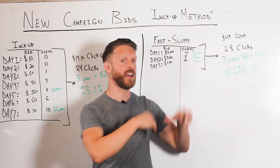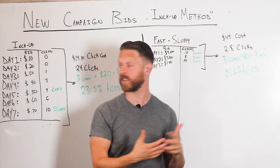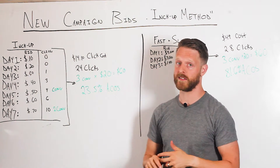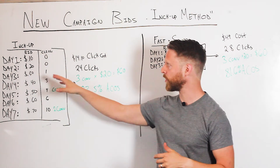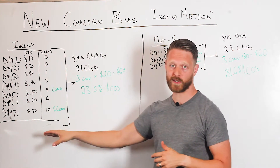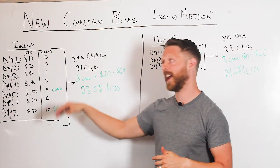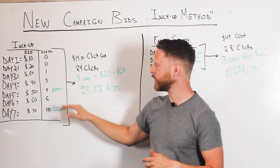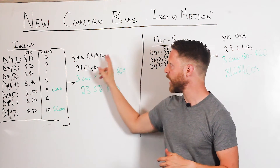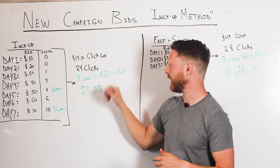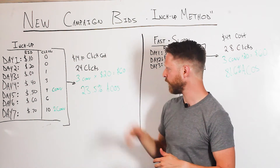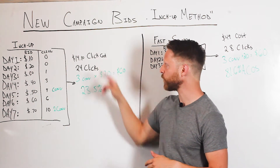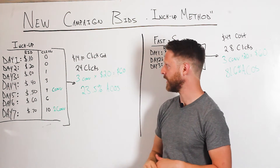The same three conversions I just paid fifty bucks for in the fast and sloppy method — I only paid fourteen dollars, because I started much lower and was slowly and gradually increasing in order to get data.